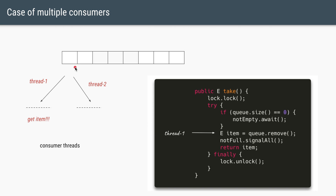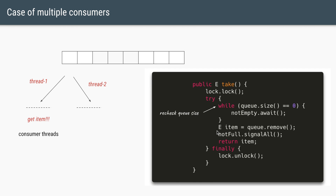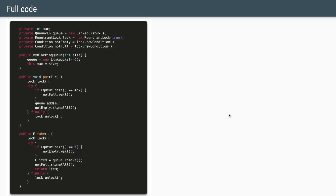To fix this, whenever threads come out of the condition wait they need to recheck the queue size. Instead of using an if statement — which has the same problem — we replace it with a while loop. Thread 2 rechecks: queue size is 1, proceeds. Thread 1 rechecks: queue size is 0, goes back into the wait state. Replacing if with while ensures the correctness of the program, and that is the complete implementation of a custom blocking queue for the producer-consumer pattern.